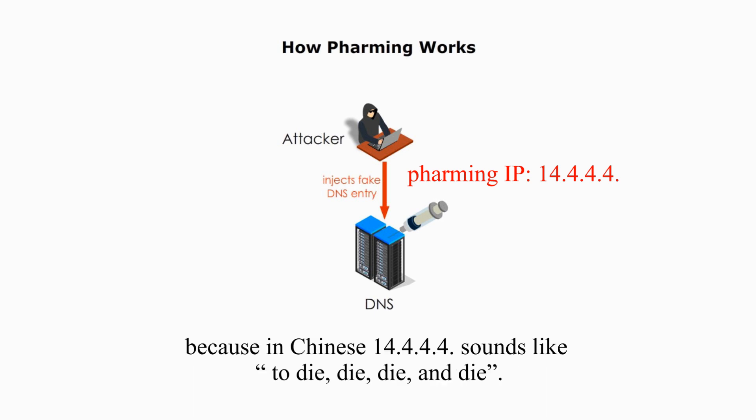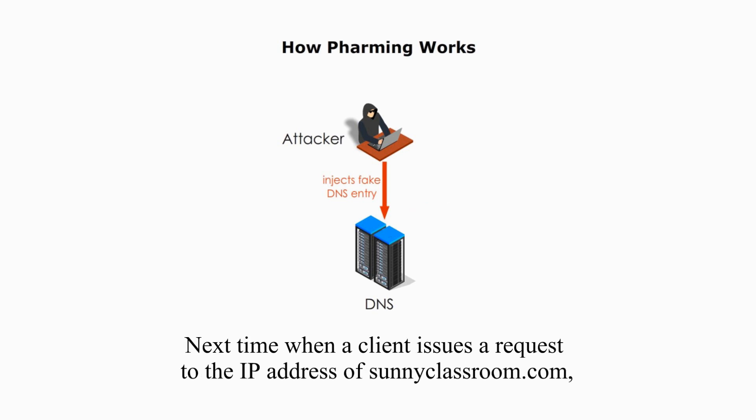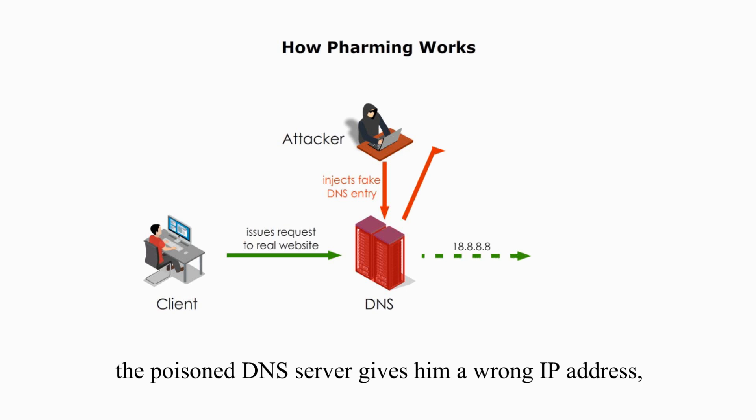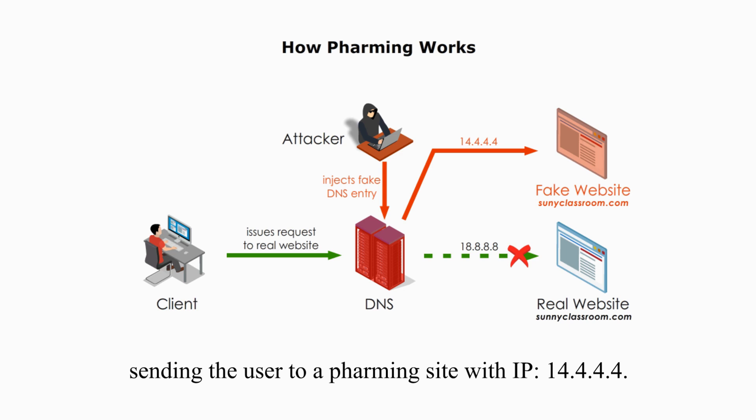This IP address is used as an example because in Chinese, 14.4.4.4 sounds like 'die, die, die and die.' Next time, when a client issues a request for the IP address of sunnyclassroom.com, the poisoned DNS server gives him a wrong IP address, sending the user to a pharming site with IP address 14.4.4.4.